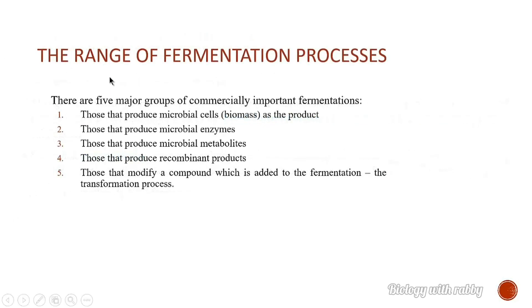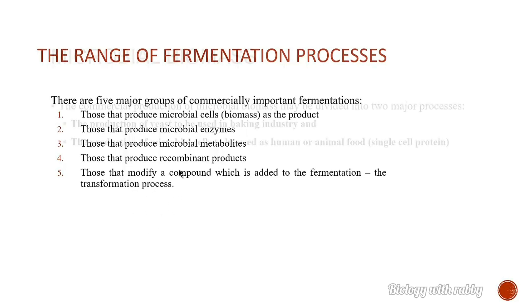The range of fermentation processes. There are five major groups of commercially important fermentations: number one, those that produce microbial cells as the product; number two, those that produce microbial enzymes; number three, those that produce microbial metabolites; number four, those that produce recombinant products; and number five, those that modify a compound which is added to the fermentation — the transformation process.